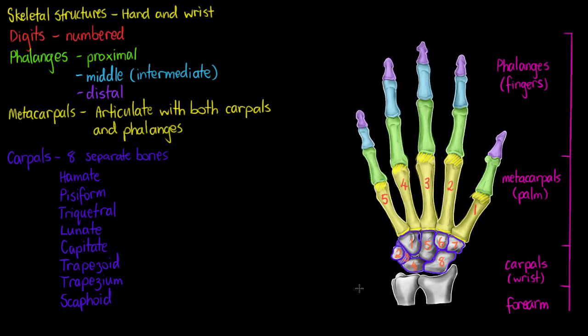And last of all, just right here we have our ulna and our radius. That covers all of the basic anatomy of the hand. I hope this has been helpful to you. Once again, thanks for watching, and I'll see you in the next video.